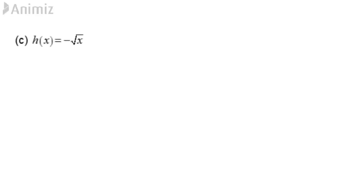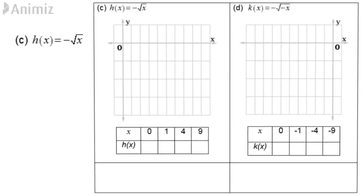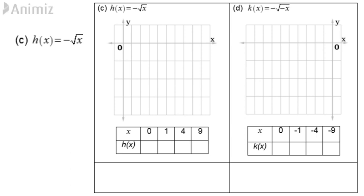C. Sketch negative square root x. As we know, the input of any square root function is always greater or equal to 0.